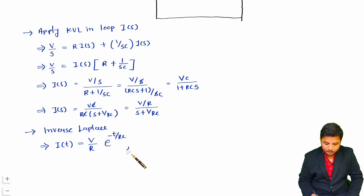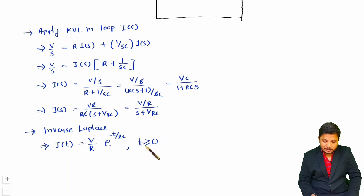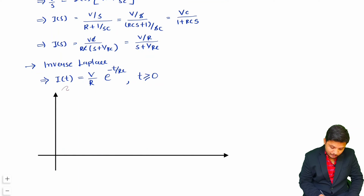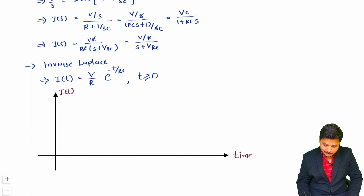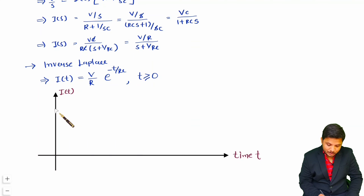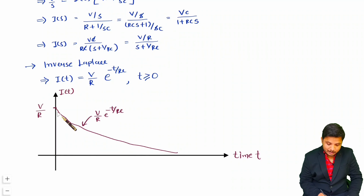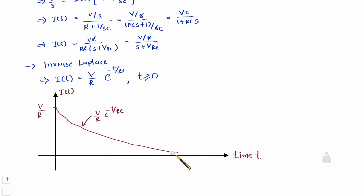Applying inverse Laplace, I of S converts to I of T. V by R is a constant, and the inverse Laplace of 1 divided by S plus 1 by RC is e to the power minus T divided by RC. So I of T equals V divided by R times e to the power minus T by RC, valid for T greater than or equal to 0. Graphically, at T equals 0 the maximum value is V by R, and as time increases, the function exponentially decreases according to e to the power minus T by RC.